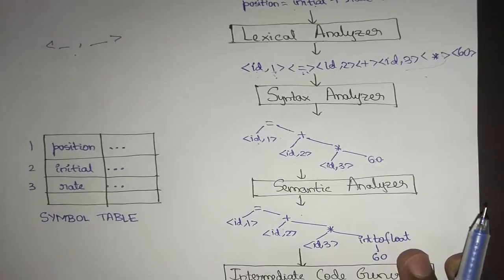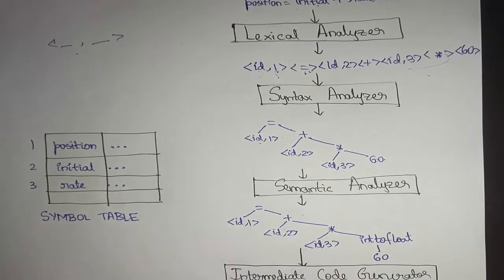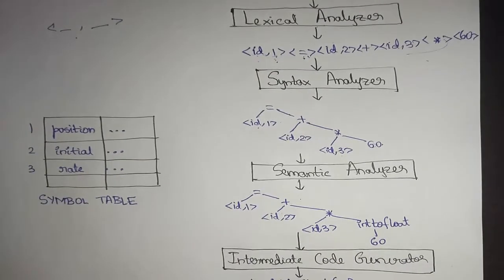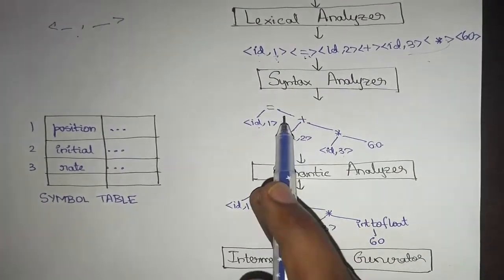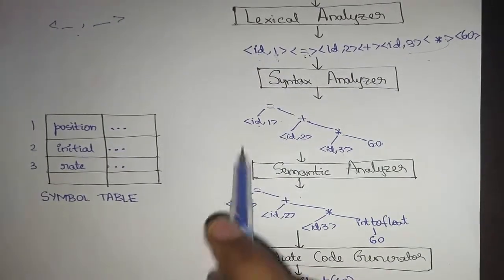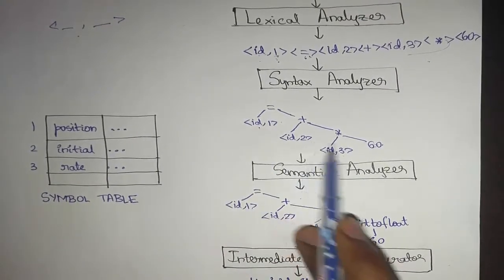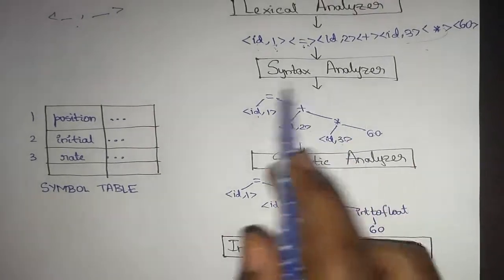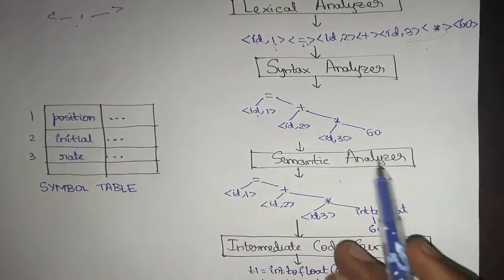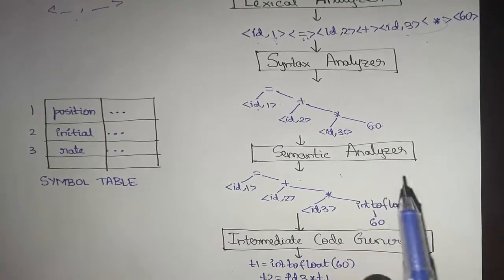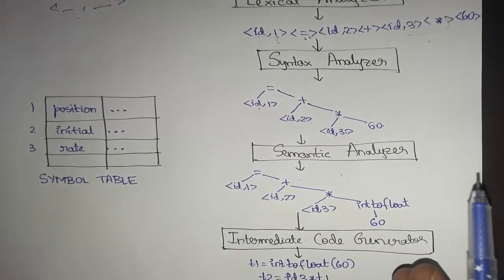The lexeme table will be discussed as a literal table in the next part of the video. The token stream is then passed as input to the syntax analyzer, which generates the syntax tree where the nodes are the operators and the leaf nodes are the operands. This syntax tree is next given to the semantic analyzer as input, which generates a semantically correct syntax tree, or the annotated syntax tree.